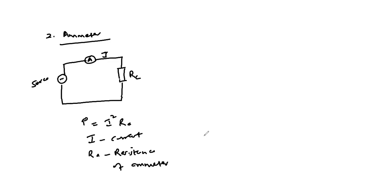We would want this power to be very small, and therefore the internal resistance of the ammeter must be very small. In other words, ammeters are fabricated with very small internal resistances so as to ensure that the power consumed in the ammeter is very small.